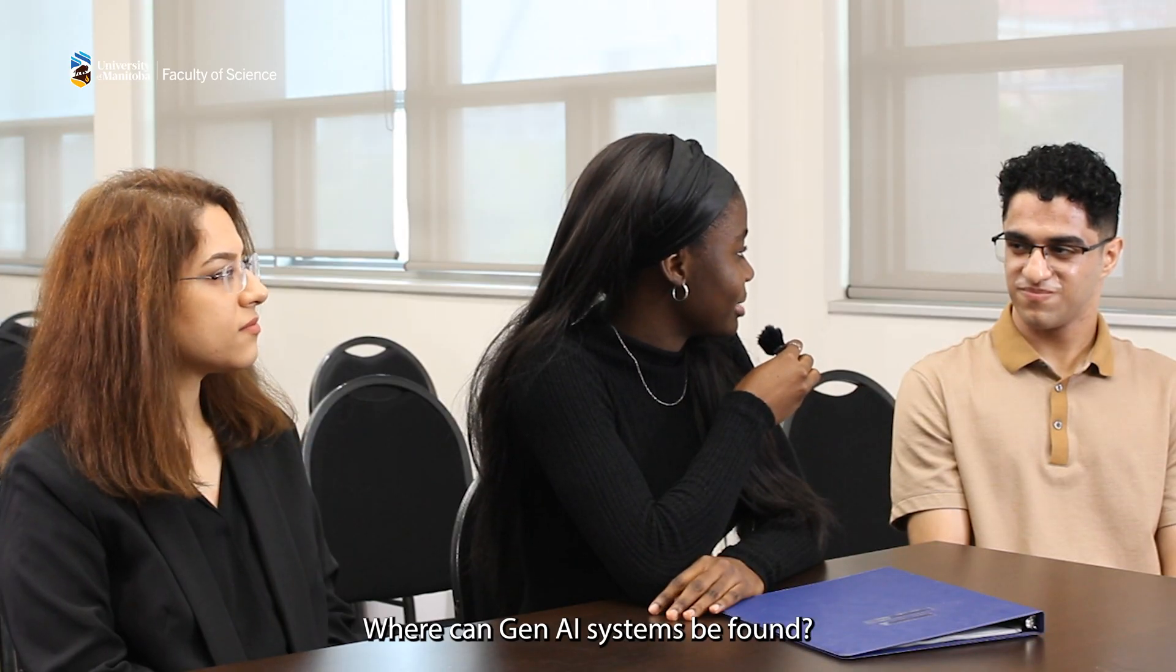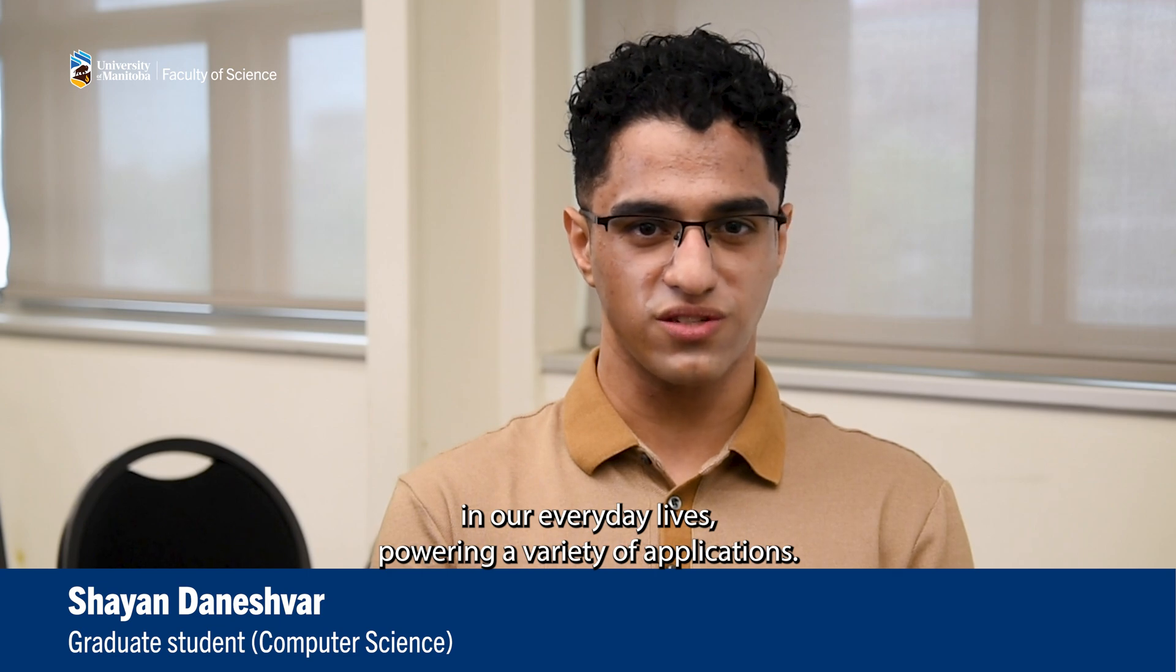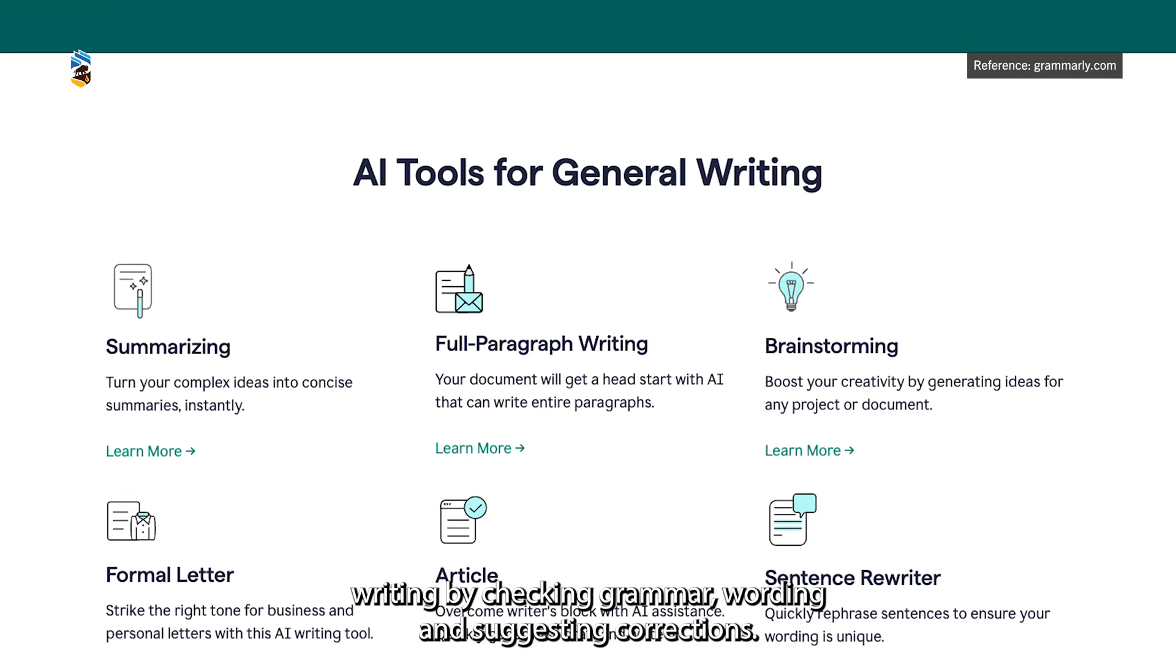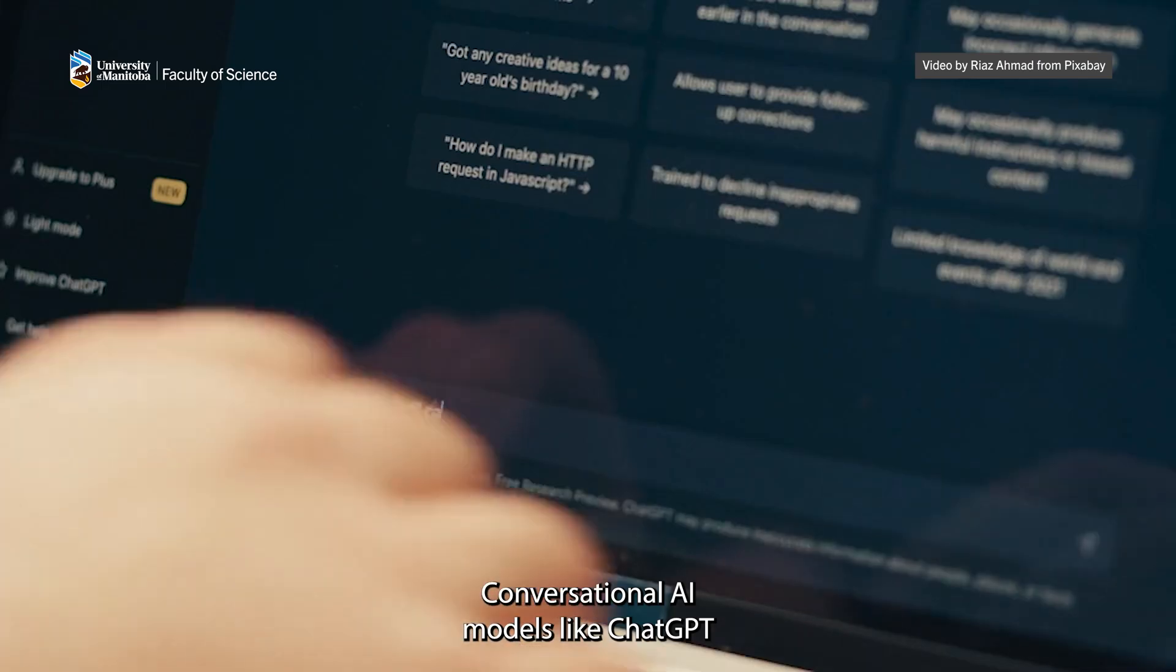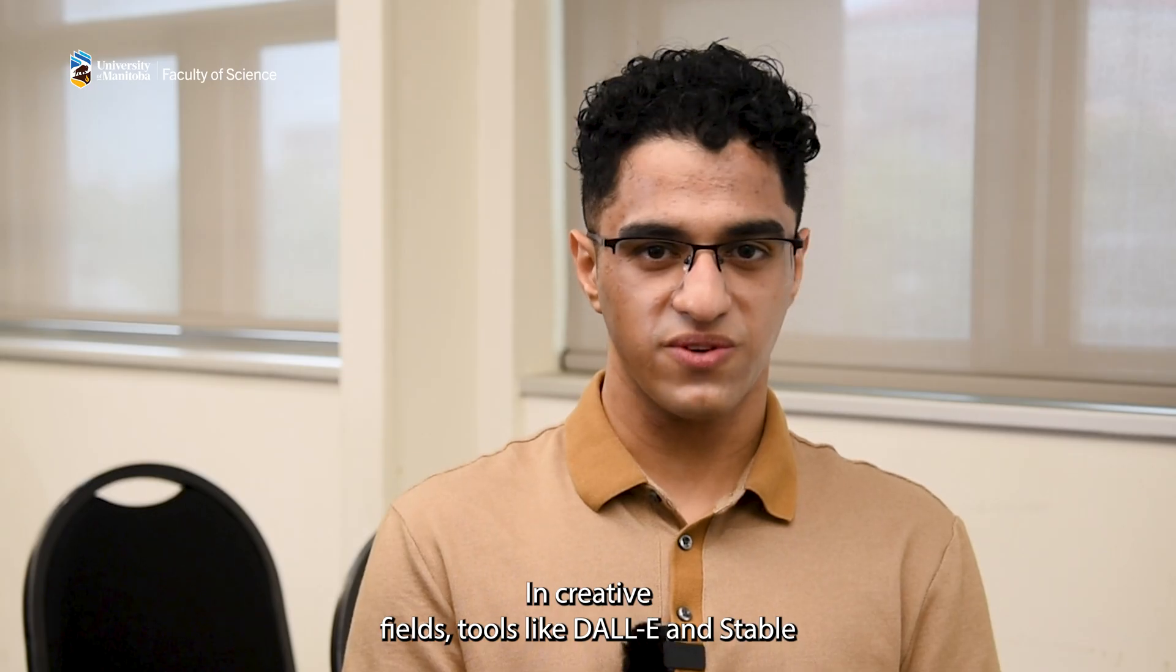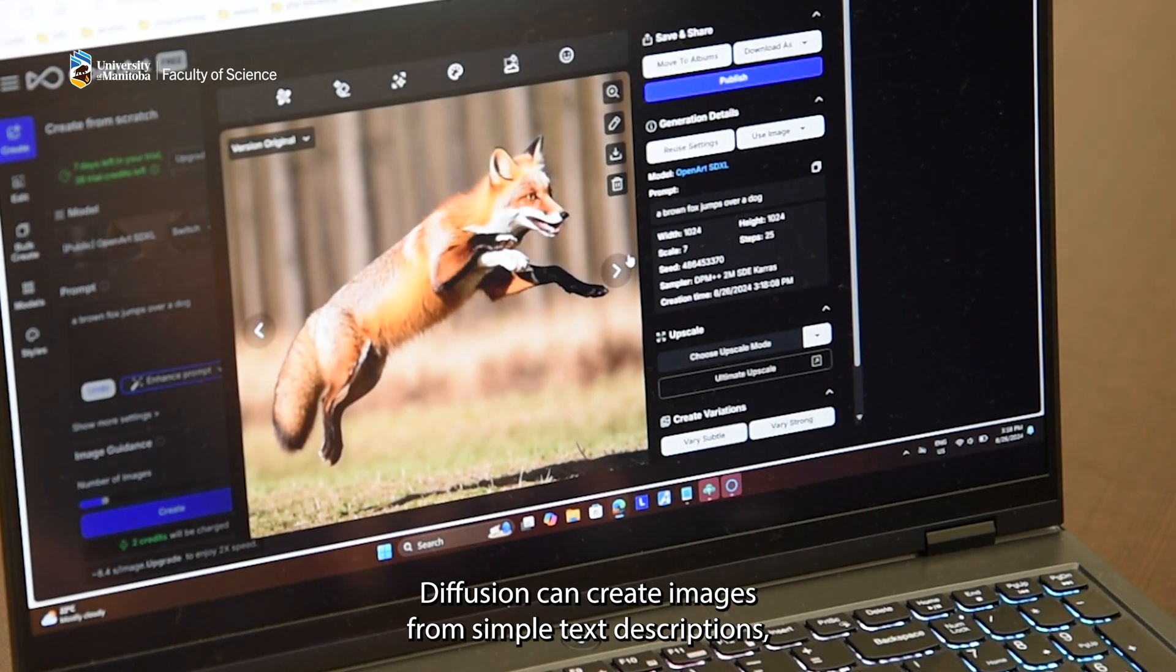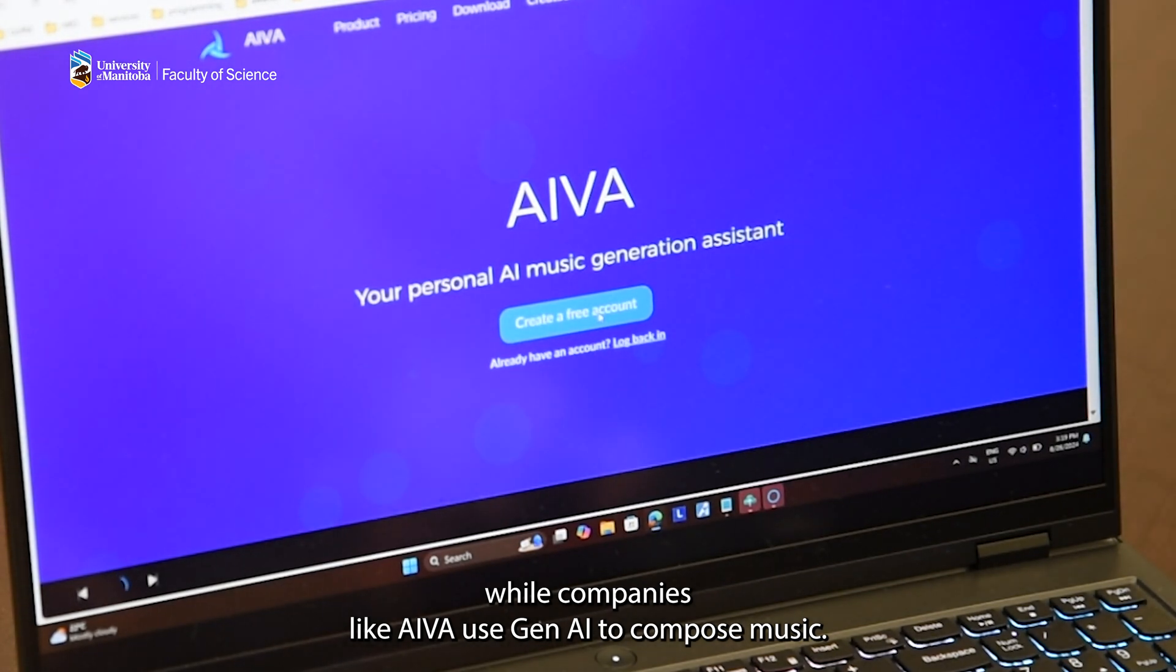Where can Gen AI systems be found? Generative AI is becoming increasingly common in our everyday lives, powering a variety of applications. Grammarly has been helping people improve their writing by checking grammar, wording and suggesting corrections. Conversational AI models like ChatGPT have expanded the possibilities such as drafting emails, writing stories and even generating code. In creative fields, tools like DALL-E and Stable Diffusion can create images from simple text descriptions, while companies like Aiva use Gen AI to compose music.